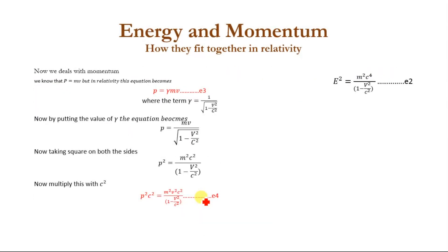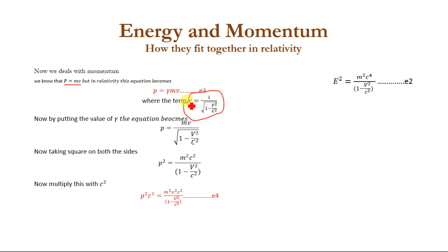Now we deal with momentum. We know that linear momentum is given as P = mv, but in relativity this becomes P = γmv, where γ = 1 / √(1 - v²/c²). Putting this value of γ in, momentum becomes P = mv / √(1 - v²/c²).